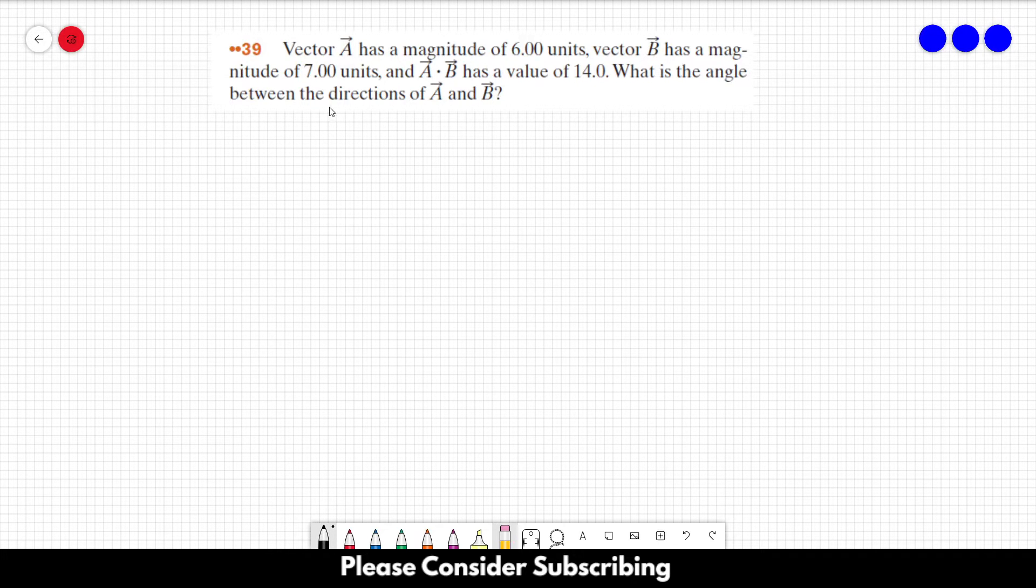Number 39. Vector A has a magnitude of 6 units. Vector B has a magnitude of 7 units, and A dot B has a value of 14. What is the angle between the directions of A and B?